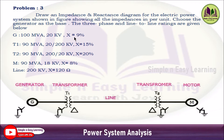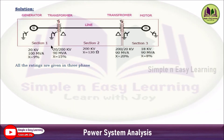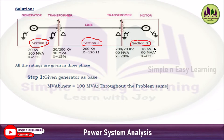The reactance values X for generator, transformer, and motor are given in percentage — so 9% means 0.09 per unit. The single line diagram shows the generator connected to transformer T1, then to the transmission line, then transformer T2, and finally to the motor. We divide the diagram into three sections: Section 1 is the generator and the low-voltage (primary) side of transformer T1; Section 2 is the high-voltage side of T1, the transmission line, and the high-voltage side of T2; Section 3 is the low-voltage side of T2 and the motor.